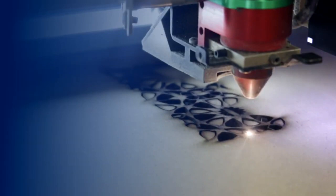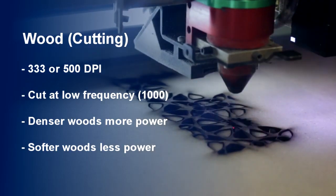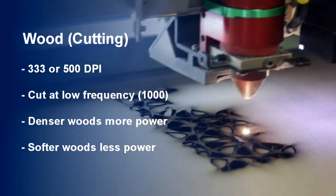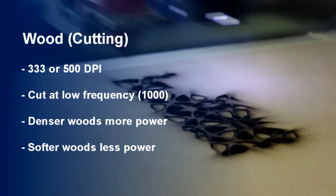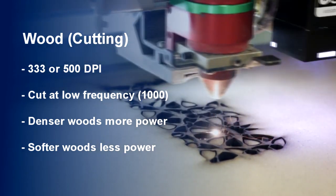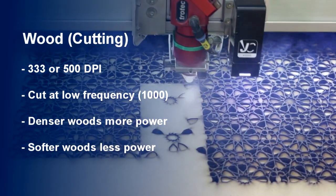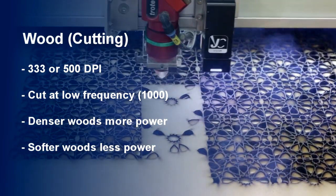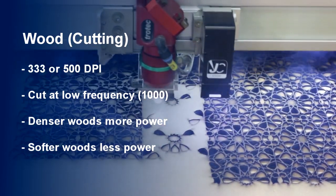Tips for cutting wood: use 333 or 500 DPI and cut at a low frequency level such as 1000 Hz. Denser woods require more power — such as alder, balsa, beech, oak, and walnut. Softer woods require less power — for example, MDF, cedar, pine, and spruce. Also consider the thickness of your material, which plays a factor in your parameters.